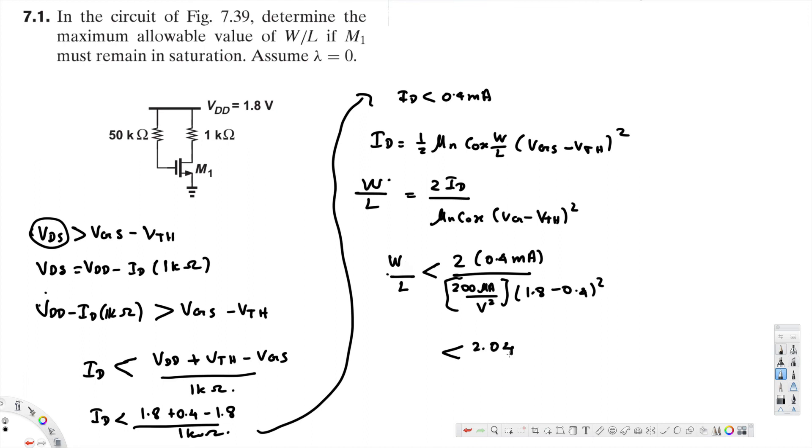2.04 over 1. So W over L must be less than 2.04 over 1. This is the maximum allowable value of W over L to make this one remain in saturation region.